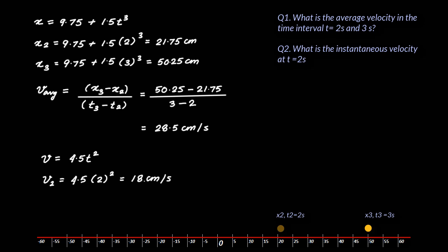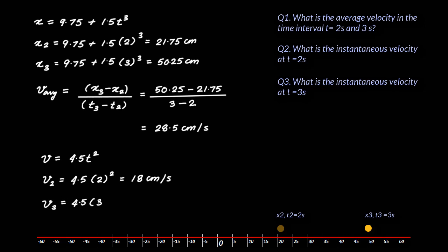What is the instantaneous velocity at t = 3 seconds? Using the same formula, velocity at t = 3 seconds equals 4.5 × 3² = 40.5 centimeters per second.